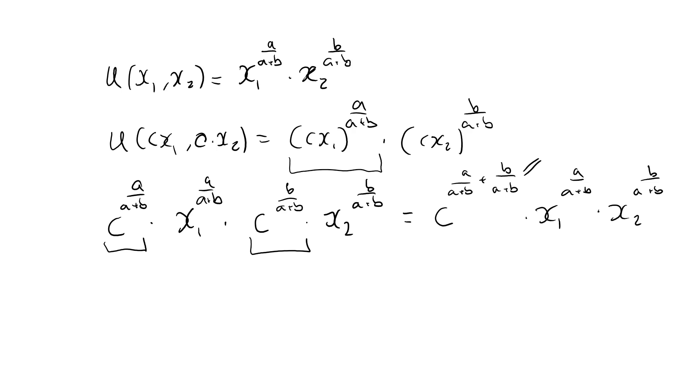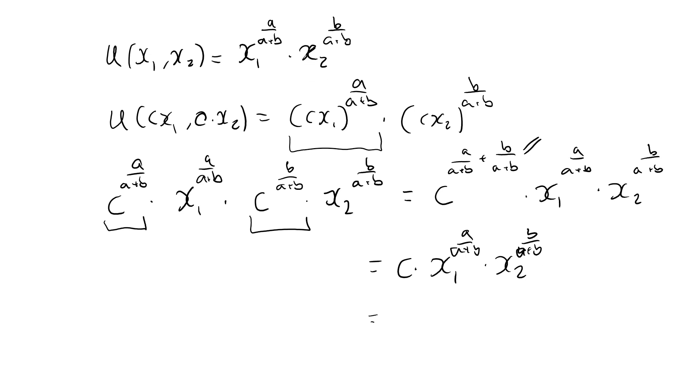And this comes out to be c times x1 raised to a over a plus b times x2 raised to b over a plus b, which is precisely what we're looking for: c times the utility function evaluated at x1, x2.